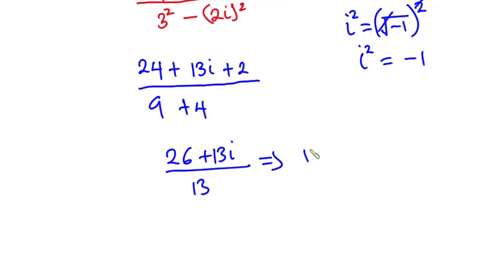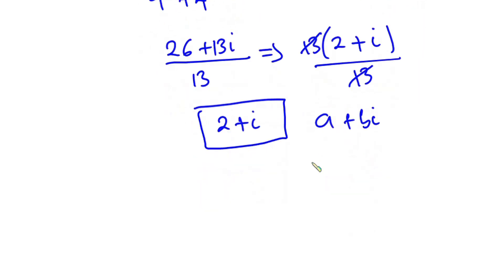So from here we have 13 into 2 plus i all divided by 13. All right, so this 13 will cancel this one. Now we have 2 plus i. So we have been able to express this in the form of a plus bi, where a is equal to 2 and then b is equal to 1. So that is it.